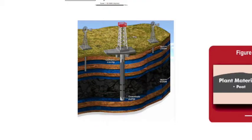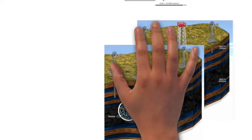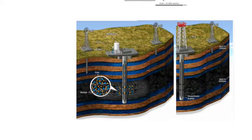To get the coal seam gas out, wells are drilled into coal seams and the water pumped out. This water is known as formation water. By removing the water, it releases the gas into the well, ready for consumption.